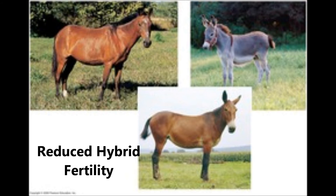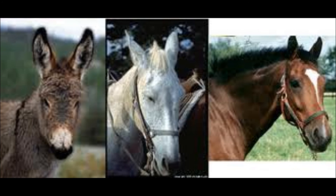Now let's talk about reduced hybrid fertility. In some cases, hybrid zygotes successfully develop into adults but the adult individuals do not produce viable gametes. This isolating barrier, known as hybrid sterility, restricts the amount of genome mixing that can occur across two species. A classic example of a sterile hybrid is the mule, the offspring of a female horse and a male donkey. All mules typically are sterile. However, in the fly genus Drosophila, crosses between different species produce sterile male hybrids and female hybrids that usually are fertile.